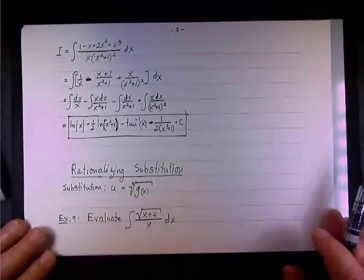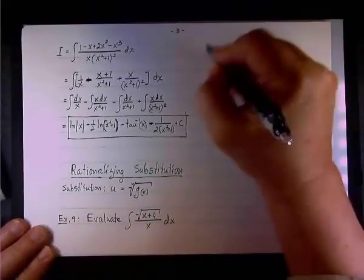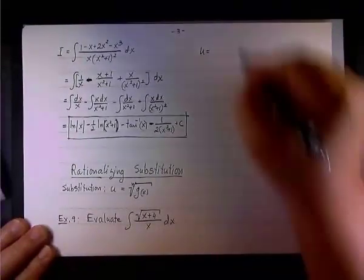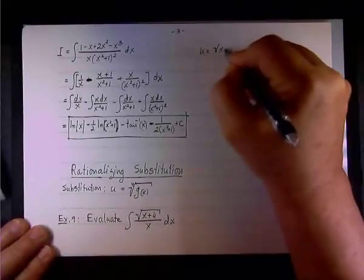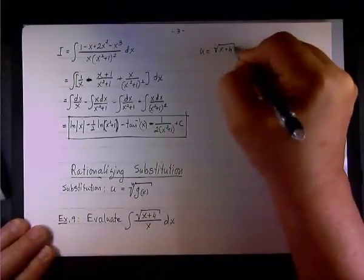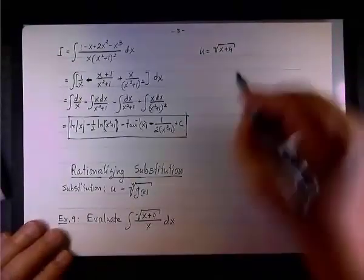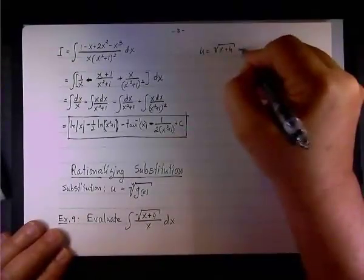So, what we're going to do, here we're going to use the substitution u equals the square root of x plus 4. Now, this by itself is not entirely comfortable substitution.